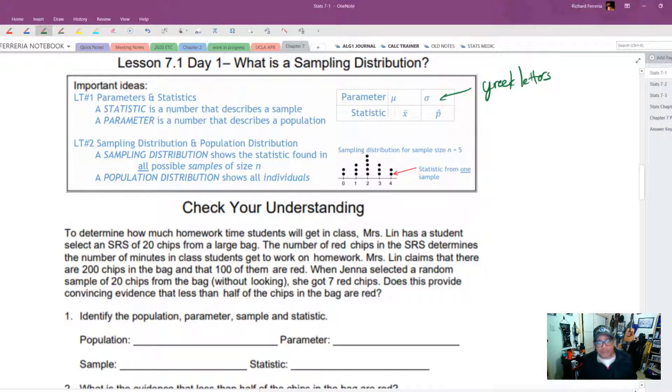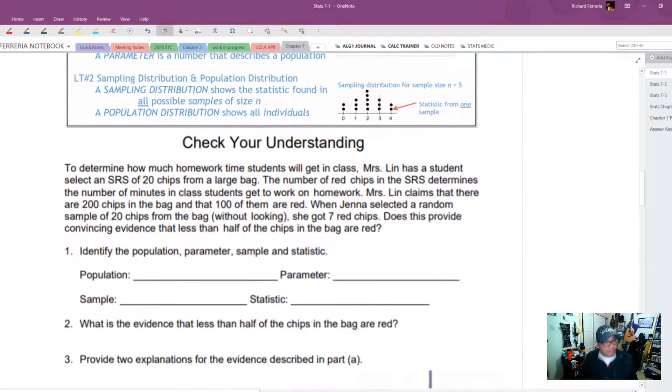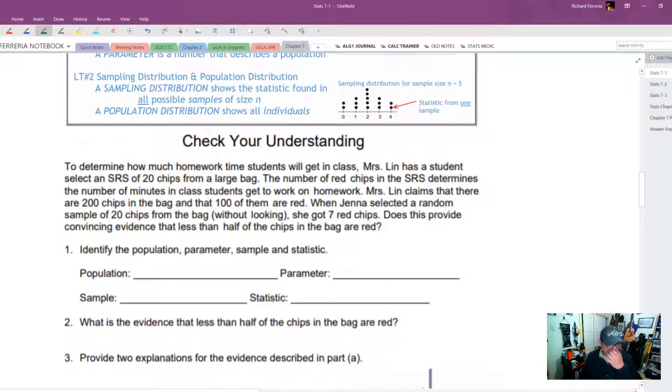So when you're looking at a sampling distribution and for argument's sake, we're saying this is a sampling distribution with n equals 5, one of these dots represents a statistic from one sample. So this is a sample of 5. This one over here is a sample of 5. Each one of those dots represents a sample of 5. That's kind of a definitional part of this.